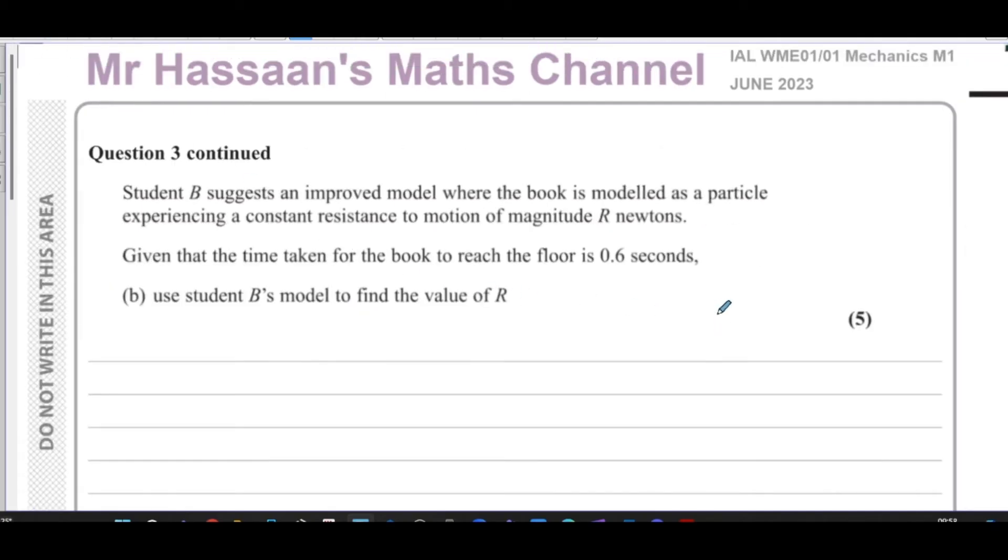Now for part B of this question, student B suggested an improved model where the book is modeled as a particle, experiencing a constant resistance to motion of magnitude R newtons. Given that the time taken for the book to reach the floor is 0.6 seconds, use student B's model to find the value of R.